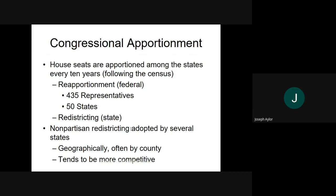Once the state has received the idea of how many representatives they are going to have, the state legislature is responsible for redistricting. They will actually draw the district lines that a representative is responsible for speaking for in Congress. Most of the time we try to do what is called nonpartisan redistricting, where we do not look at it from the standpoint of who's voting for who, or by race or gender. Most of the time we just do it geographically by county lines — that is how Kentucky has done it.